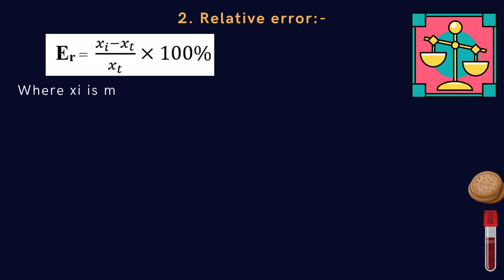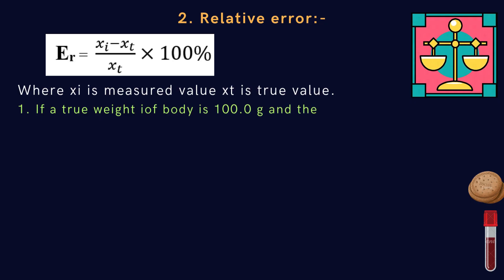Another one is relative error, ER, which equals xi minus xt divided by xt, multiply by 100%. Where xi is measured value, xt is true value.